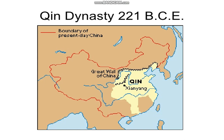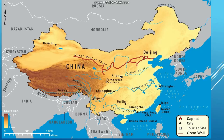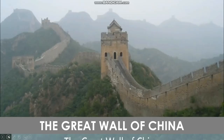The Qin dynasty started its rule by 221 BCE and holds a remarkable place in Chinese civilization. The Qin dynasty was the one which began to build the Great Wall of China. The emperor Qin Shi Huangdi ordered that the walls of the northern Chinese states be connected, which enabled the northern walls to ward off attacks from invaders from the north. Construction of the Great Wall began in the 7th century BCE.